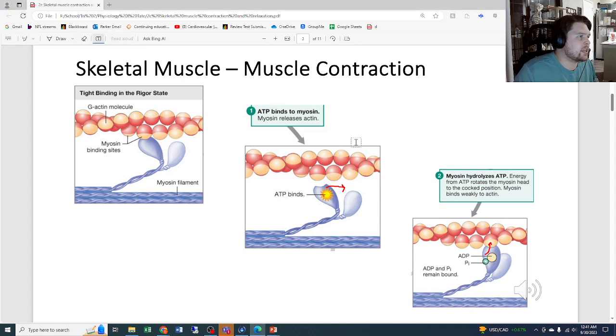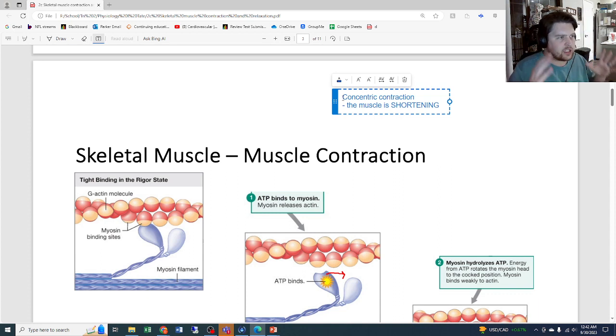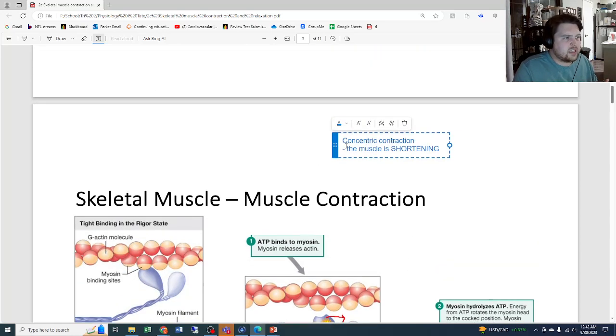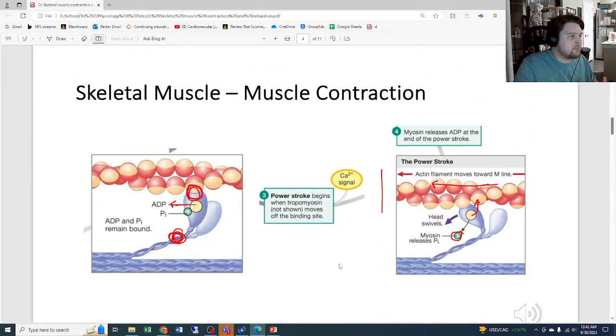This sort of contraction that we're talking about here is known as a concentric contraction. This means that the muscle is shortening—it's contracting and the muscle is shortening. There are other types of muscle contraction: there's concentric, eccentric, and then we'll also have isotonic muscle contractions. What we're describing here specifically with this power stroke being pulled like this is referring to the concentric contraction.